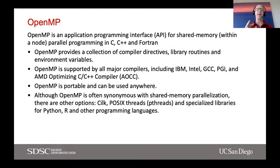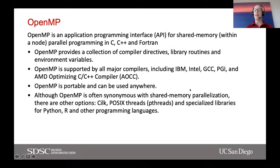OpenMP is an API for shared memory programming used in C, C++, and Fortran. It provides a collection of compiler directives, library routines, and environment variables. It's supported by all major compilers — IBM, Intel, GCC, PGI, and AMD's AOCC, which is used on Expanse — so if your code has been parallelized with OpenMP, you should be able to build and run it anywhere. Like MPI, OpenMP is often synonymous with shared memory parallelization, but other options include the CILK programming language, POSIX threads, and specialized libraries for Python, R, and other languages.